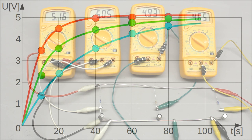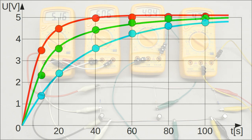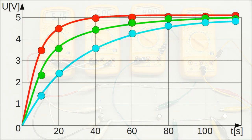The maximum rate of change can be detected at the beginning, while there is just a slight increase in voltage after some time has passed. All three curves tend toward the value of the constant input voltage.